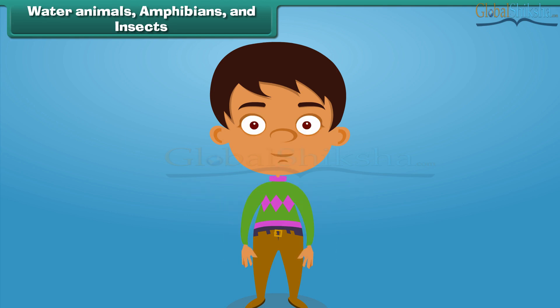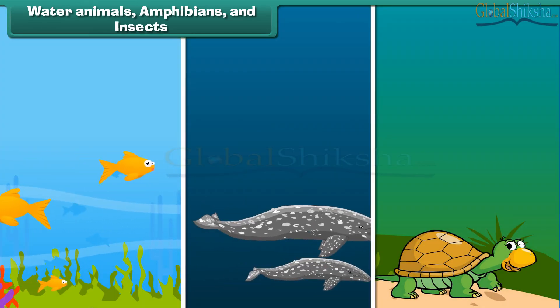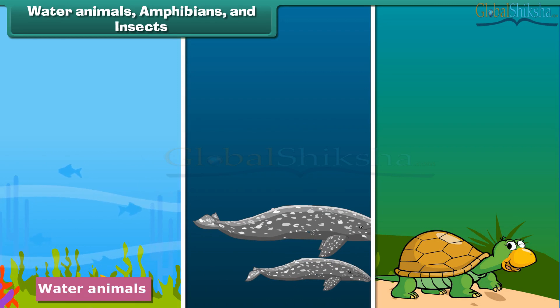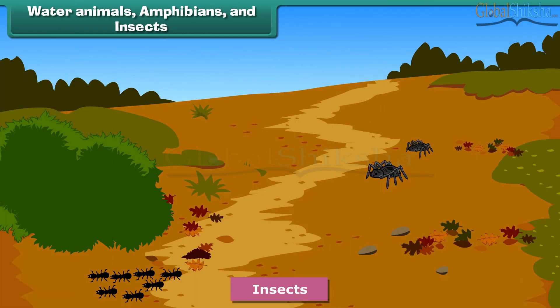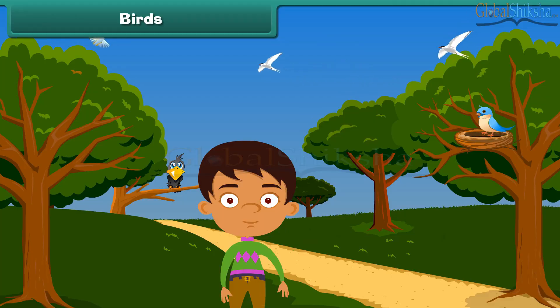Now let us know about other animals like water animals, amphibians and insects. The animals that live in water are called water animals. Fish, whale and tortoise are a few examples of water animals. There are some animals that can live both on land and in water; these are called amphibians. For example, frogs and snakes. Insects crawl on ground or other supports, for example, spiders and ants. Some insects can fly also.